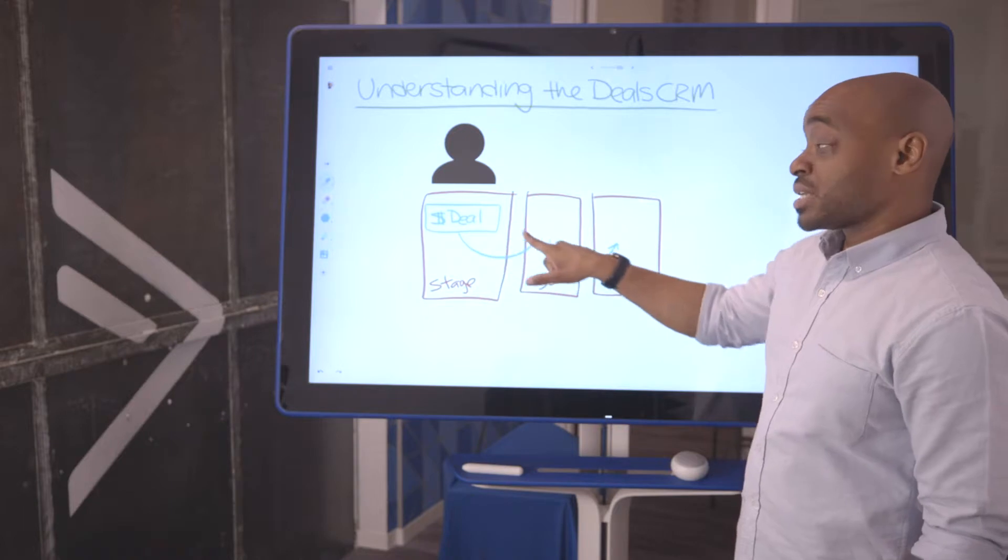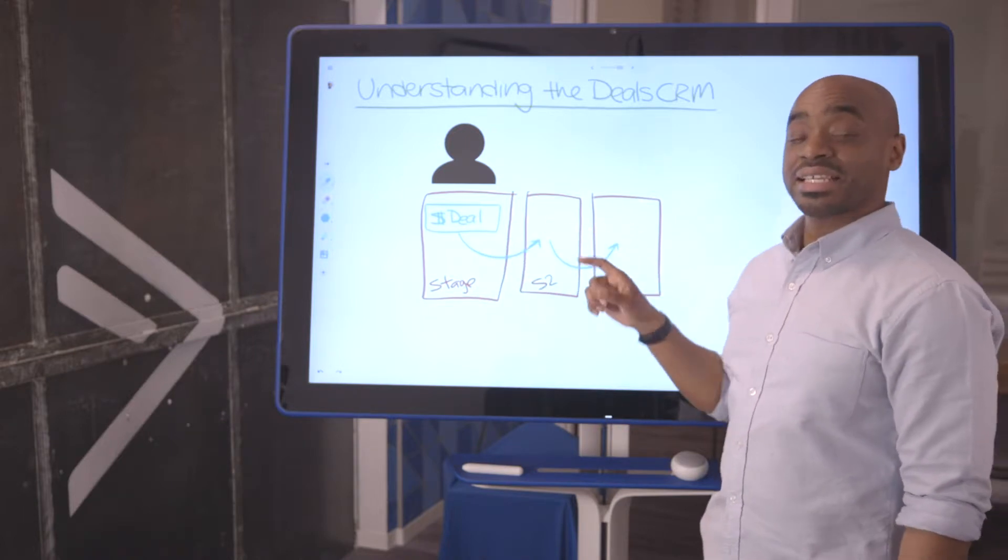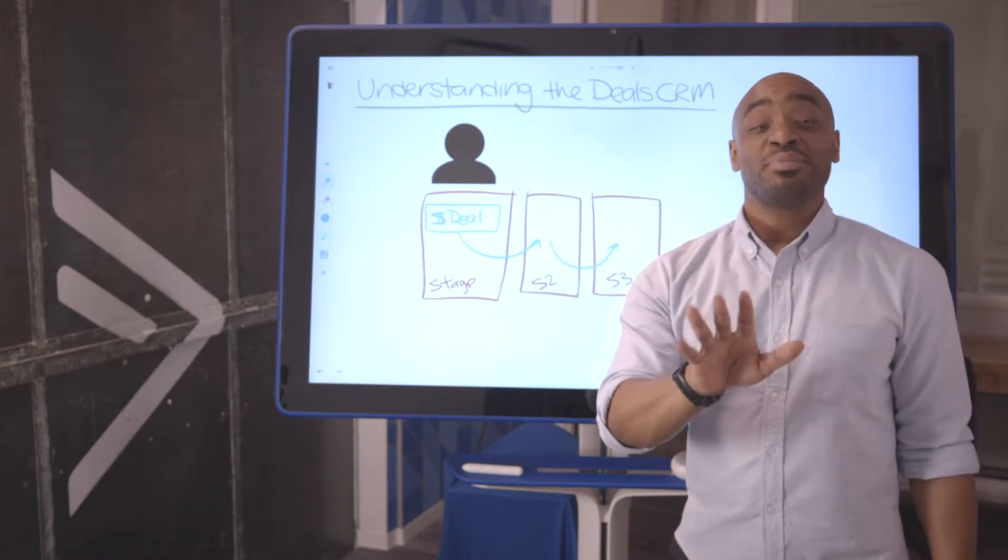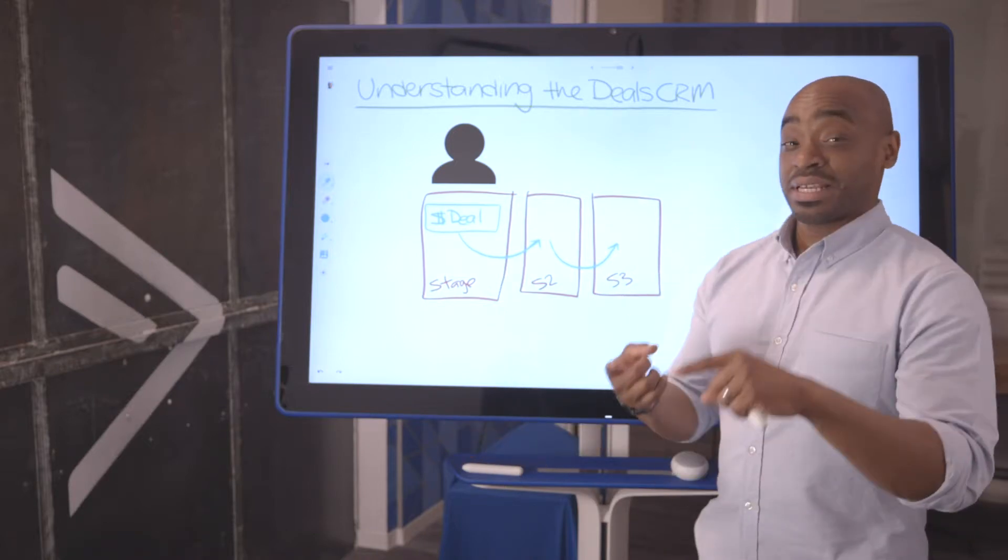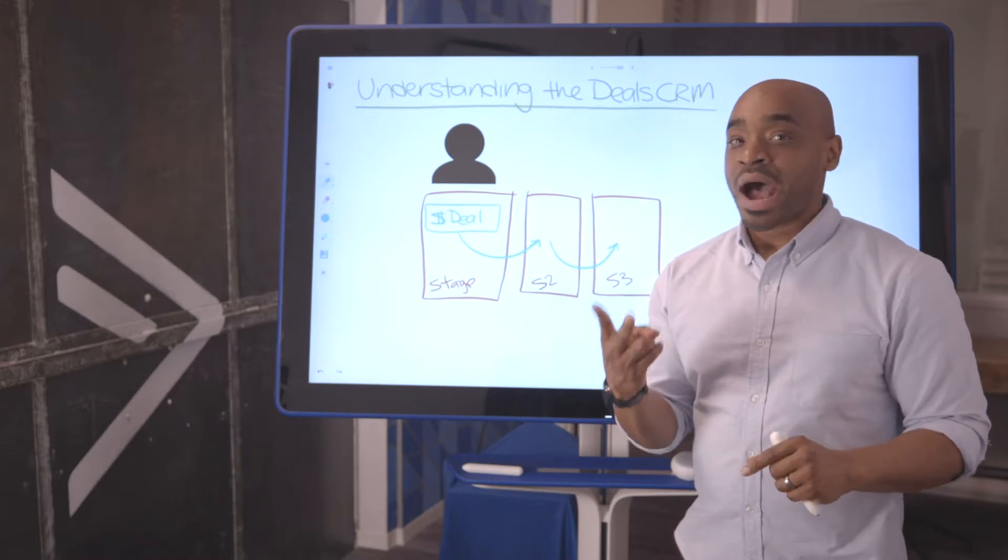Traditionally, this process of moving from one stage to the next is mandated to be manual in other platforms. In ActiveCampaign, you have the option for it to be manual or automated.